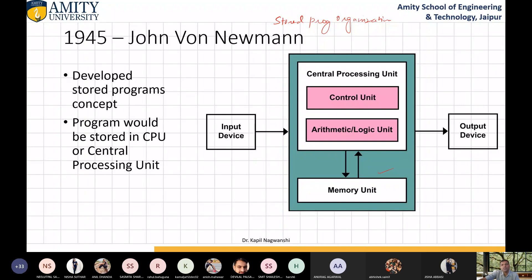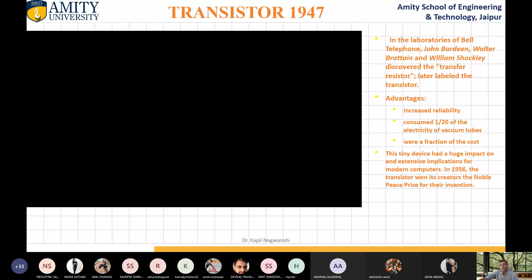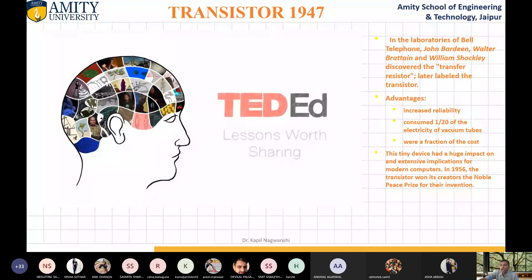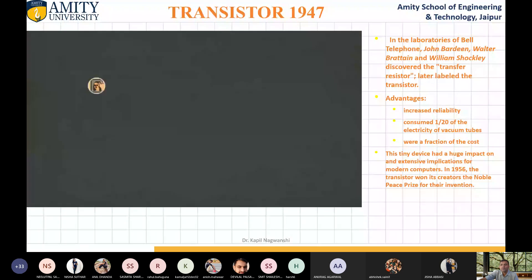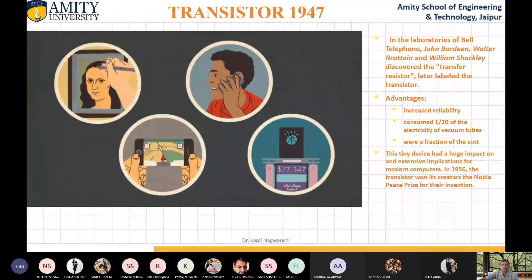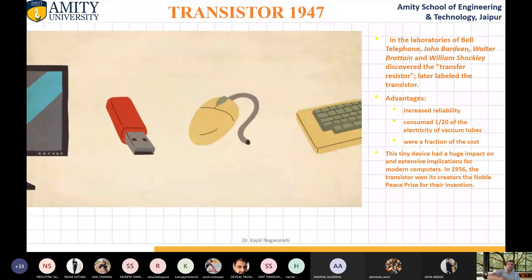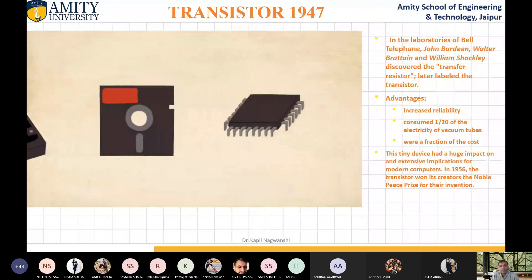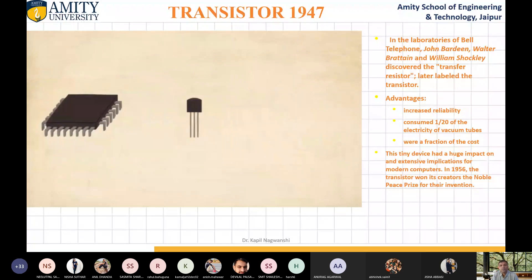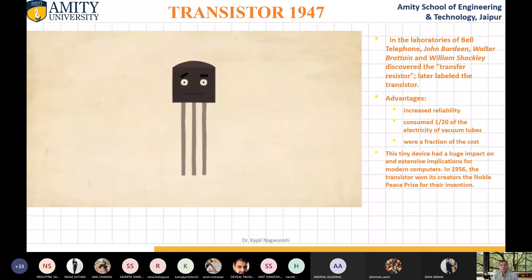Later in 1947, in the laboratories of Bell Telephone, John Bardeen and William Shockley discovered the transistor. Modern computers are revolutionizing our lives, performing tasks unimaginable only decades ago. This was made possible by a long series of innovations. But there is one foundational invention that almost everything else relies upon — the transistor.